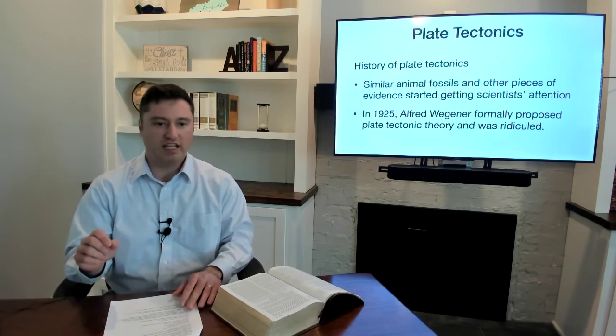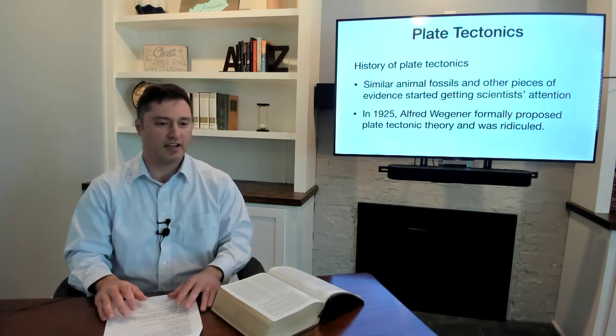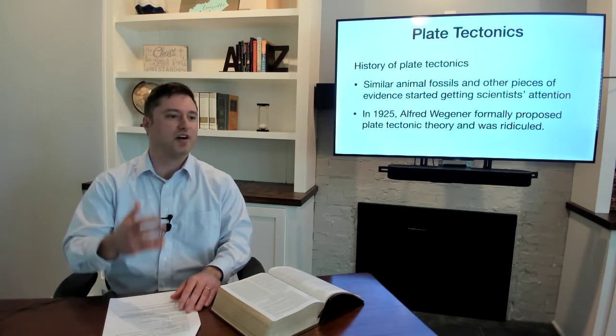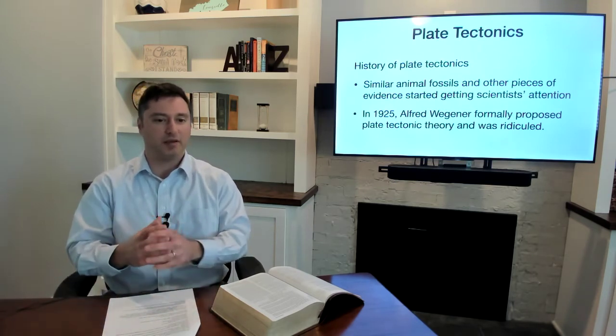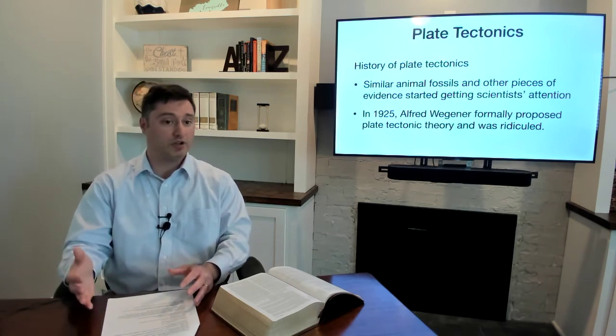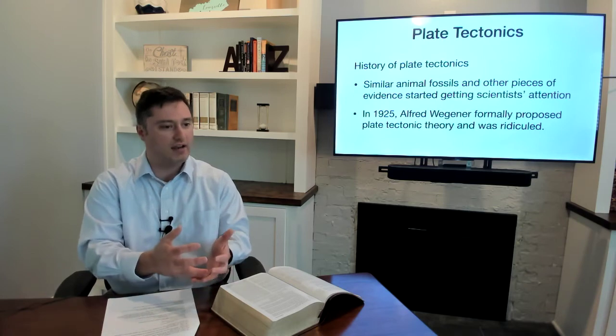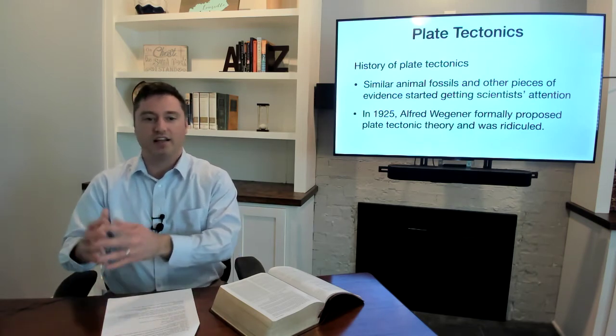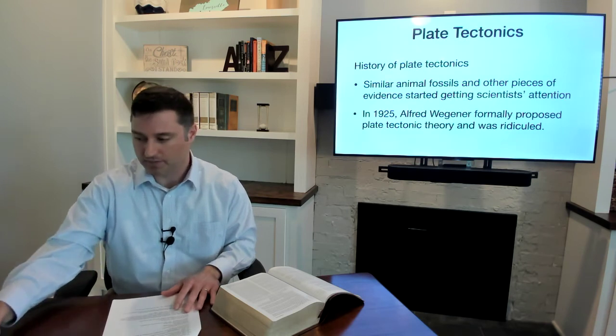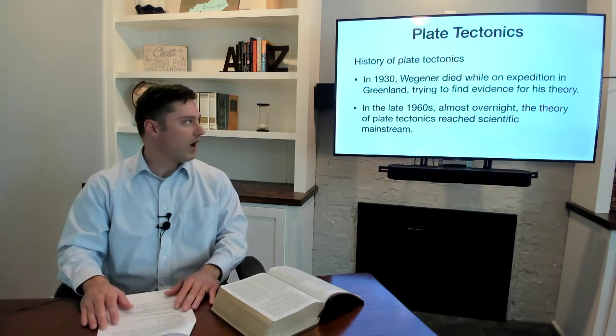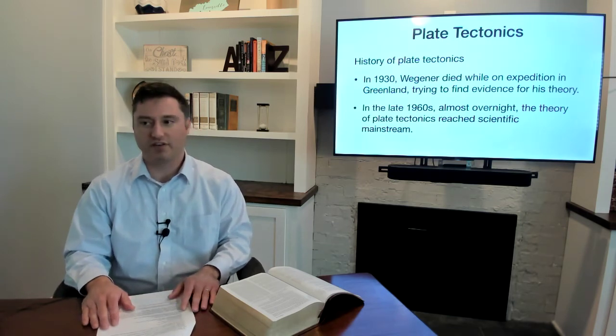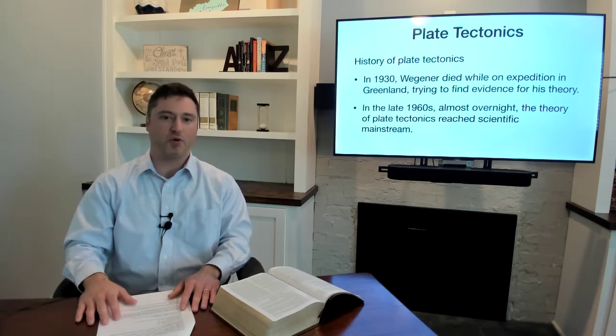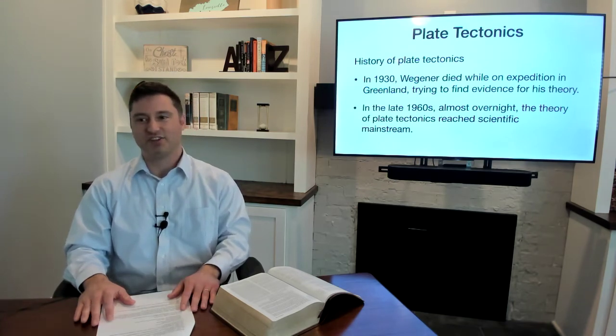But no one really proposed a theory of plate tectonics until 1925 when Alfred Wegener formally proposed plate tectonic theory. Now, the result of that was he was resoundedly ridiculed. I think it's a classic example of what can happen in science, where there is mounting evidence for a change of a theory. And because someone brings in something that's so different from the currently accepted theory, they get ridiculed. Instead of the evidence being weighed in the way that it should be the preconceived biases of the current scientists in authority, lead them to dismiss something out of hand. And it's fascinating. Unfortunately, in 1930, Wegener died while on expedition in Greenland, trying to find evidence for his theory. So his response to the ridicule was to go back to the drawing board. Maybe if I find more evidence, people will accept my theory. And unfortunately, he died trying to support his theory.